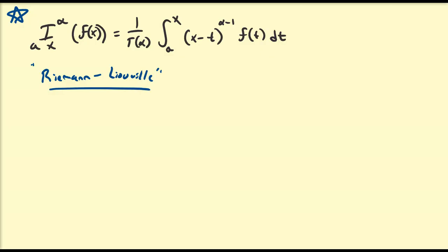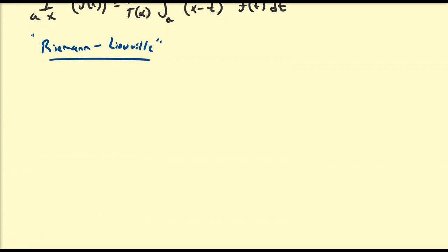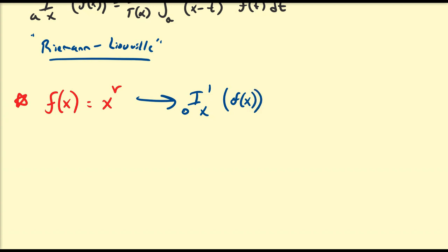Before we get started with the actual formal proof of the fractional power rule, or the fractional integral rule, I just want to show that the formula we derived in the beginning of the series actually makes sense for the integral direction. The function we're going to be interested in is f(x) = x^ν. The first integral of this function, with base points 0 and x, by definition is equal to the integral from 0 to x of t^ν dt, which by the standard power rule equals x^(ν+1) divided by (ν+1).